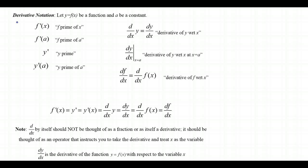Now let's explore all the different ways to represent a derivative — derivative notation. Let y equals f of x be some function and a is a constant. The notation f prime of x means take the derivative and let x be the variable; the answer must be a function, not just a number. By contrast, f prime of a — where a is a number — gives a number representing the slope of the tangent line at that particular location.